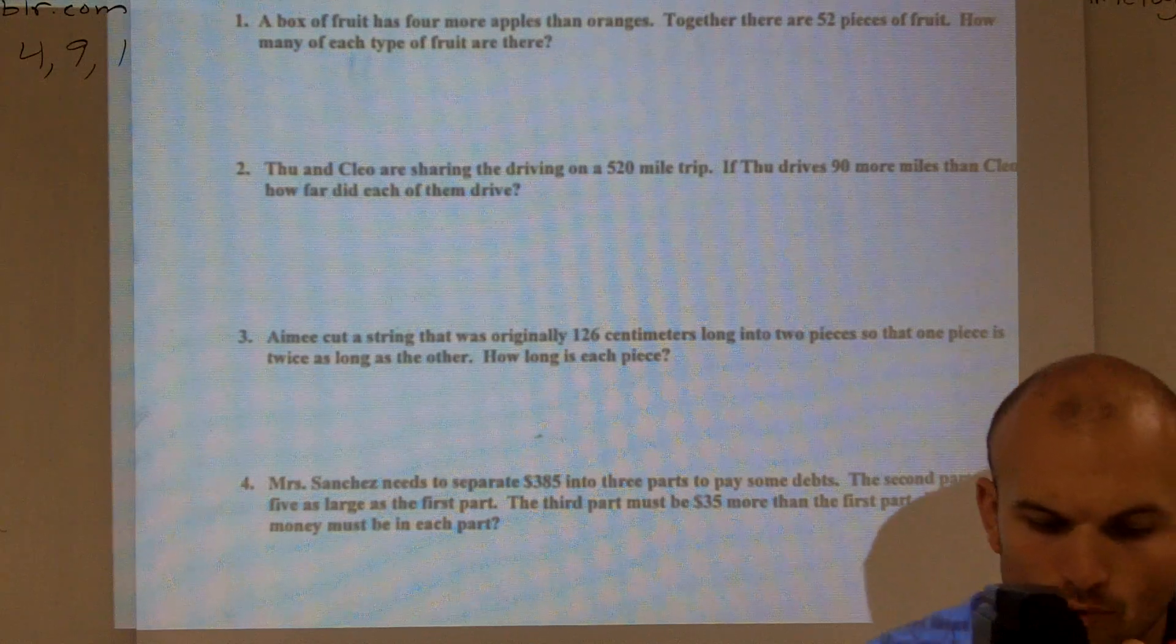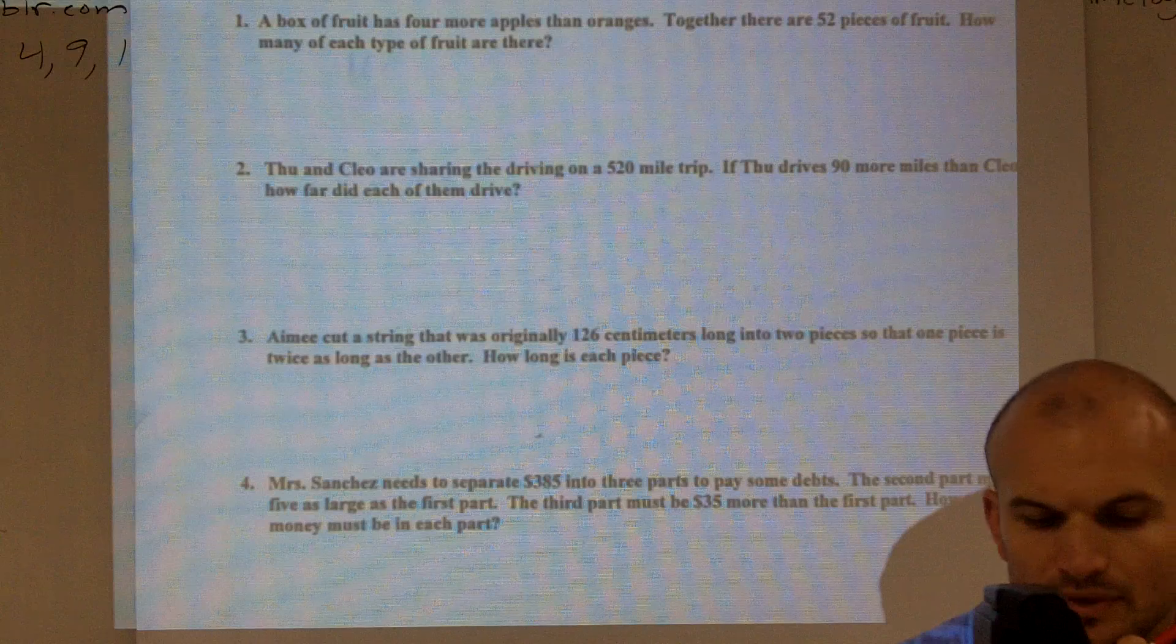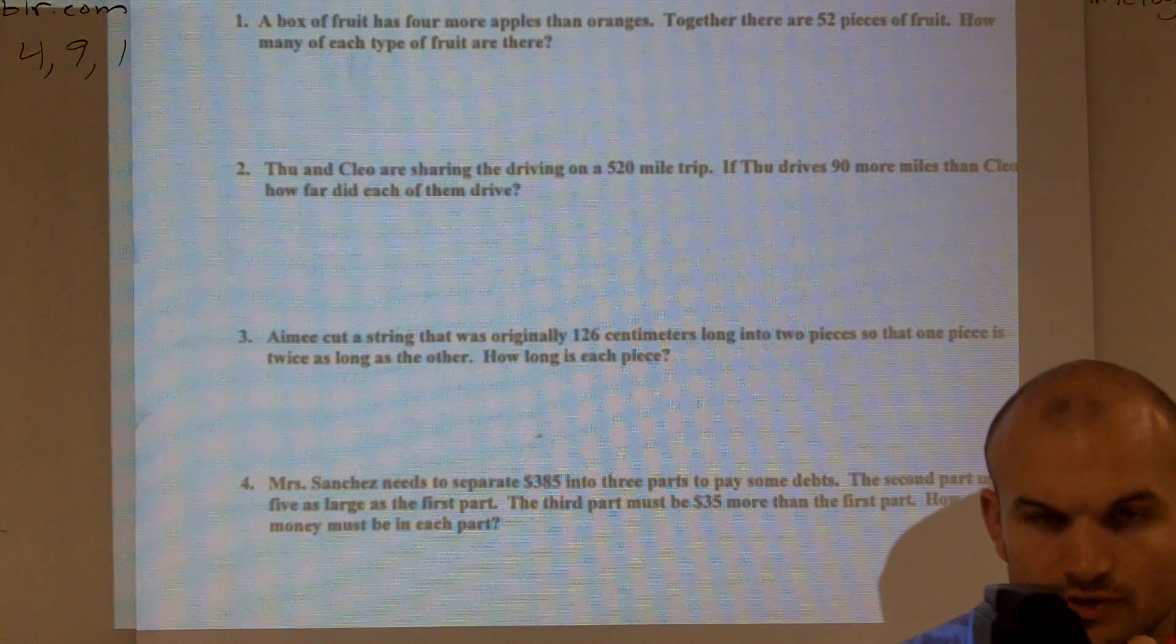It says a box of fruit has four more apples than oranges. Together there are 52 pieces of fruit. How many of each type of fruit are there?